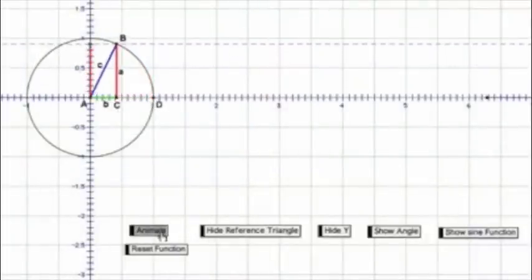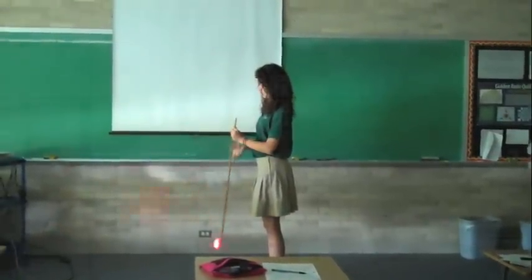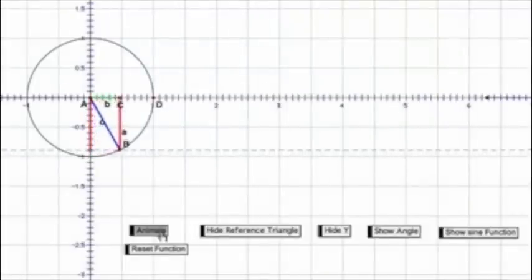By using a reference triangle on the geometry sketch pad, we could actually graph the height of the flashing red light. The height can be seen through the y side of the reference triangle.